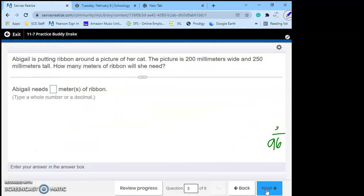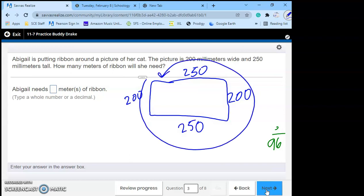Abigail is putting ribbon around a picture of her cat. The picture is 200 millimeters wide and 250 millimeters tall. How many meters of ribbon will she need? Alright so again we have a rectangle, it's 200 wide, 250 long. It's going around which is perimeter. So we have to add this up. 250 plus 250 in my head is 500. 200 plus 200 in my head is 400, which equals 900 millimeters. But they want to know how many meters that is.